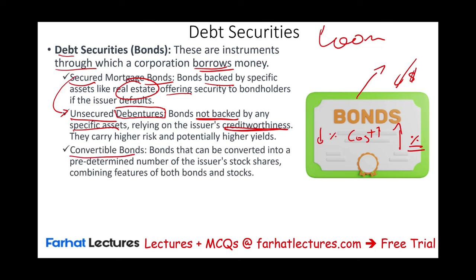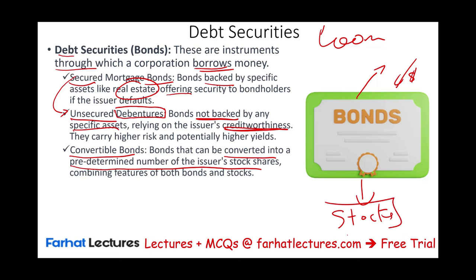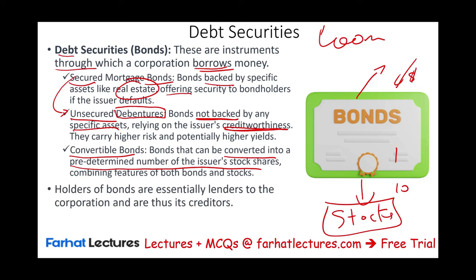Other bonds are convertible bonds — bonds that can be converted into a predetermined number of stocks. So you have bonds and the company tells you: buy the bonds, and if we do very well, you can convert your bonds into stocks. For example, for each bond you get 10 stocks. Holders of bonds are lenders to the corporation and are considered creditors. Bonds are the main form of debt securities, but any form of borrowing is a form of debt.